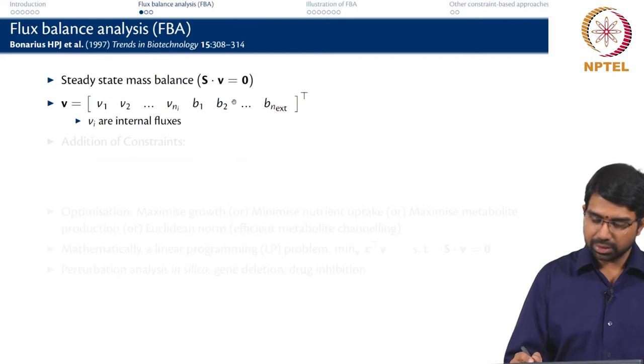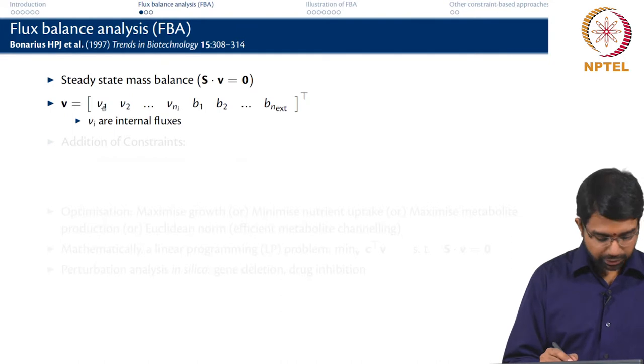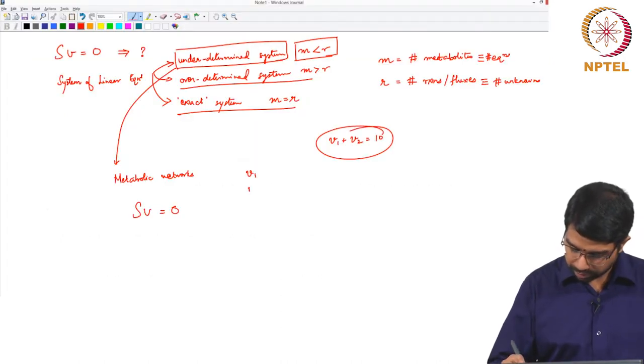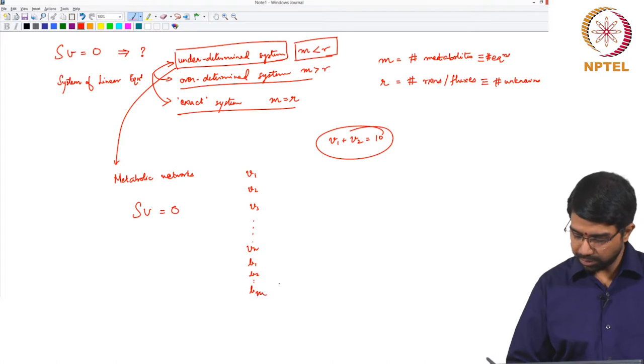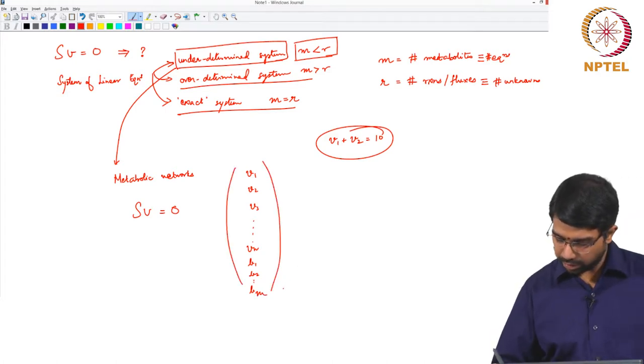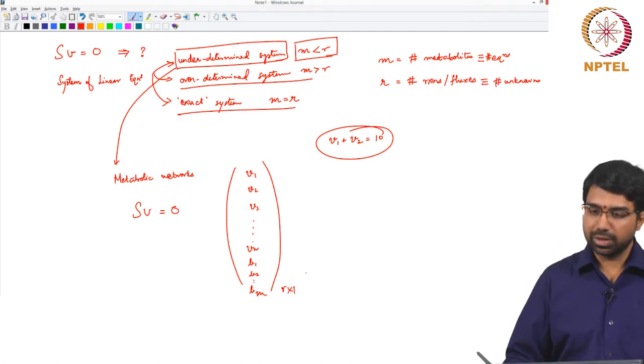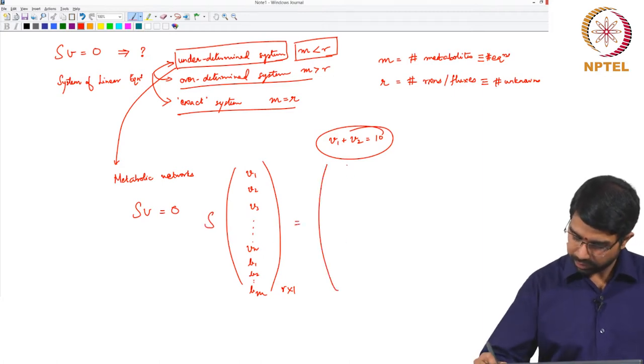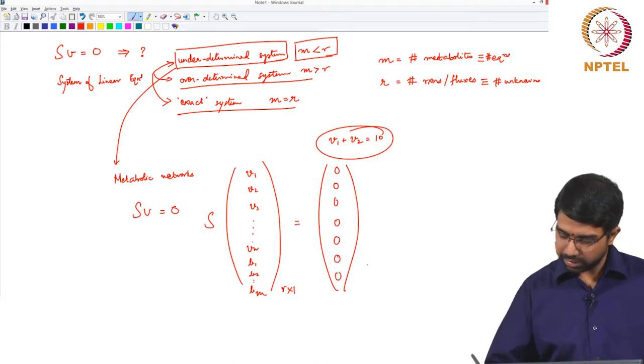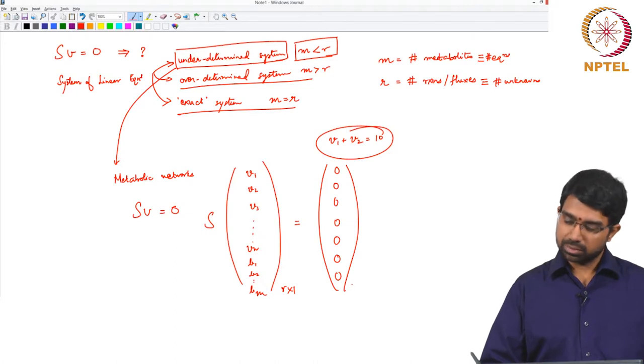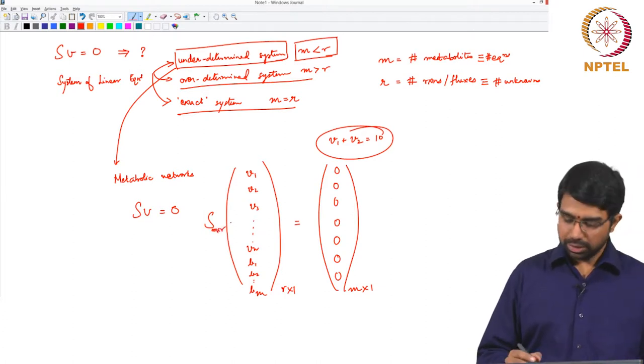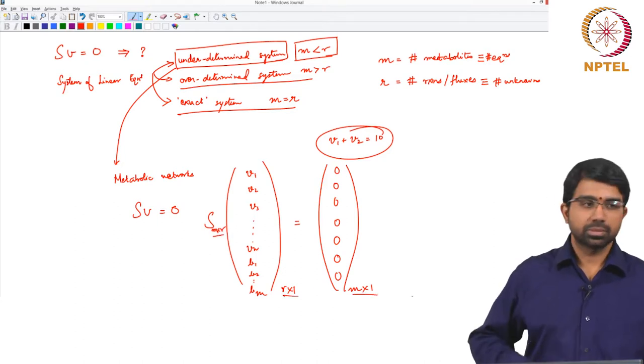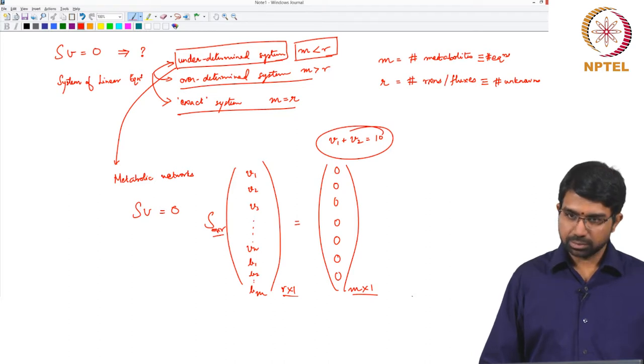V is the set of fluxes. I write it in a horizontal fashion, the transpose, to save space on the slide. So V is the internal fluxes and you can also think of external fluxes. This is going to be your r cross 1 vector that you are going to find out. This is what multiplies S. This is going to be m cross r, this is r cross 1, this is m cross 1.